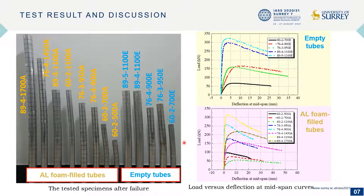The photo of the tested specimens after failure is shown on the left, and the load versus deflection at mid-span curves for both empty tubes and aluminum foam-filled tubes are plotted. At the beginning, the load increases linearly with displacement. Due to the initial geometric imperfection, overall buckling was observed.